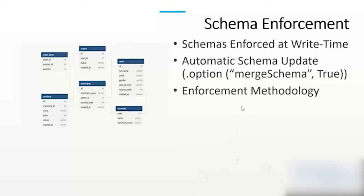The enforcement methodology checks your data and makes sure that all the columns match — that the column names match and the column data types match. It looks at that before it tries to write any data, and if some of the columns don't match by name and by data type, the write will fail.